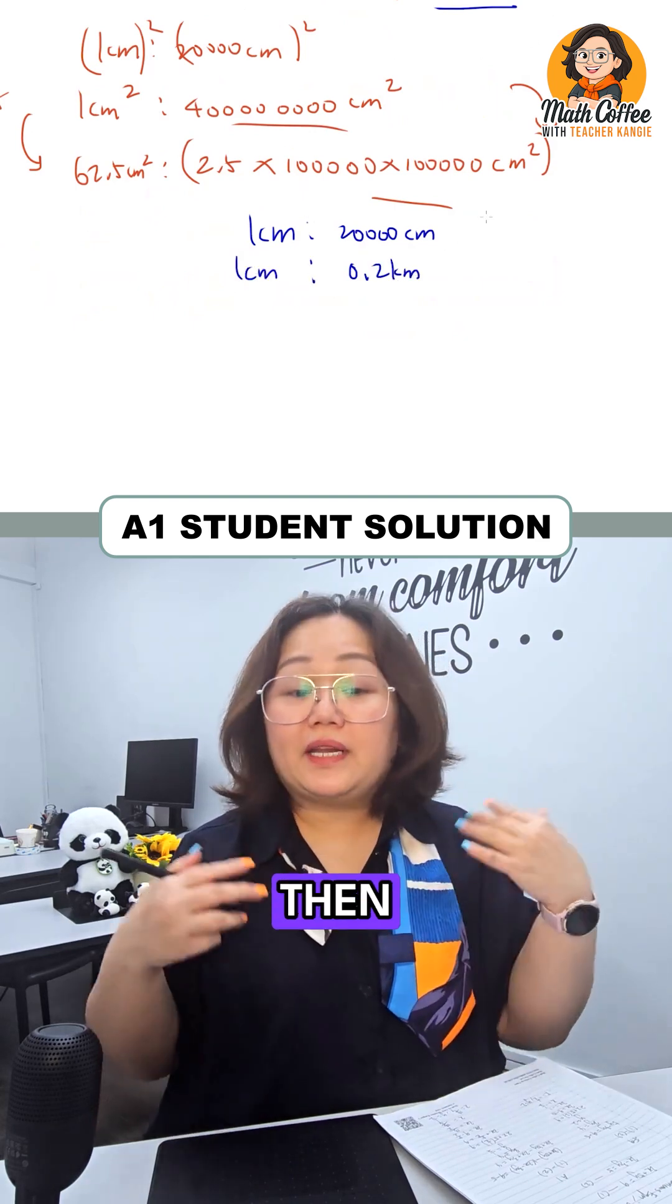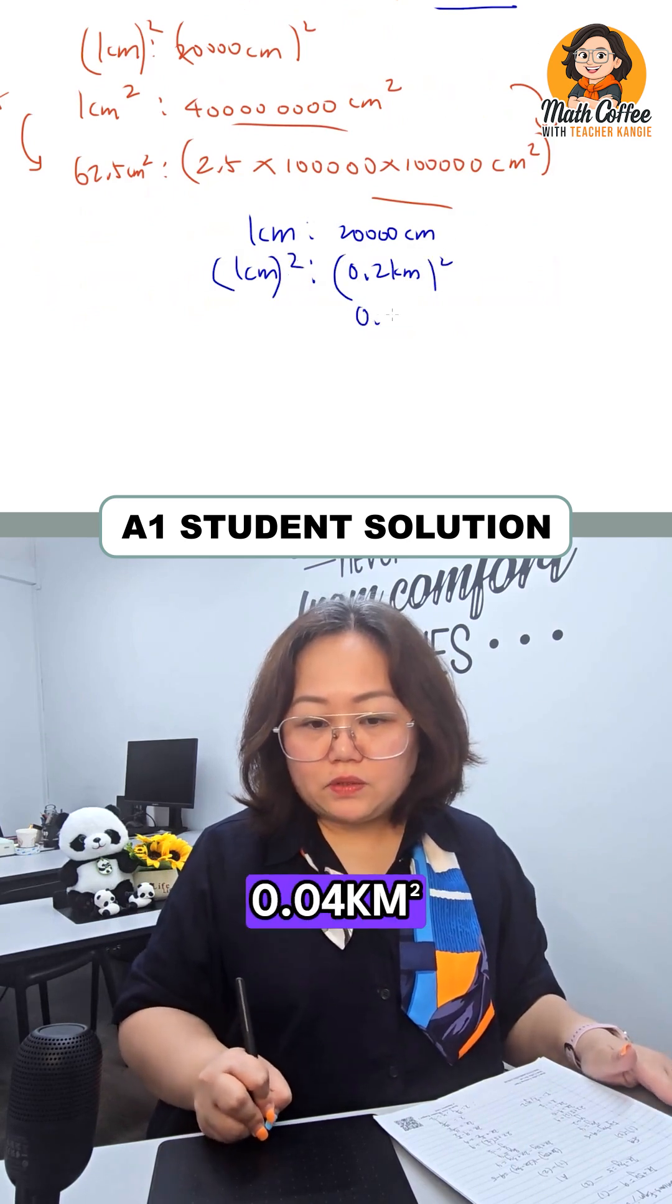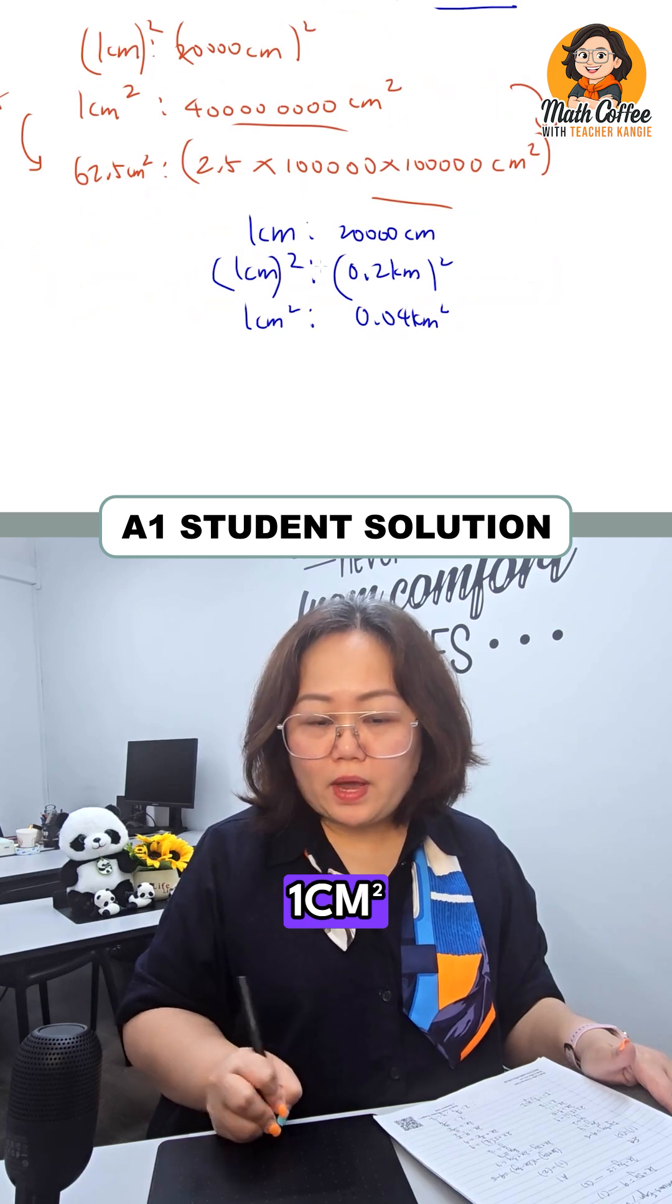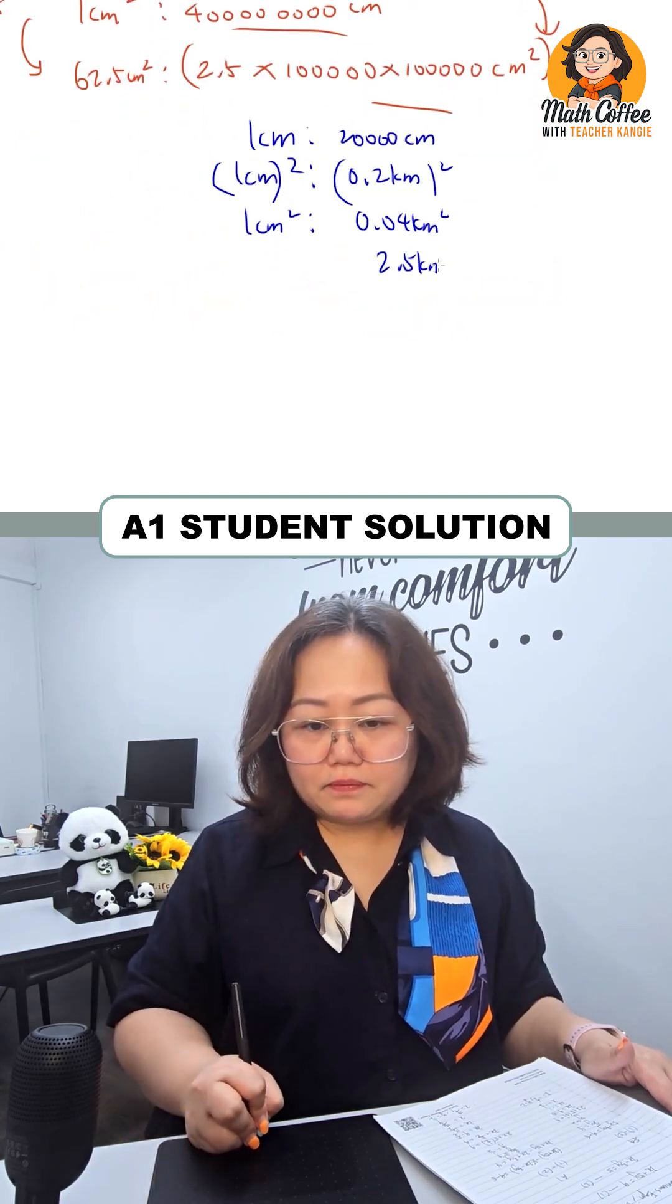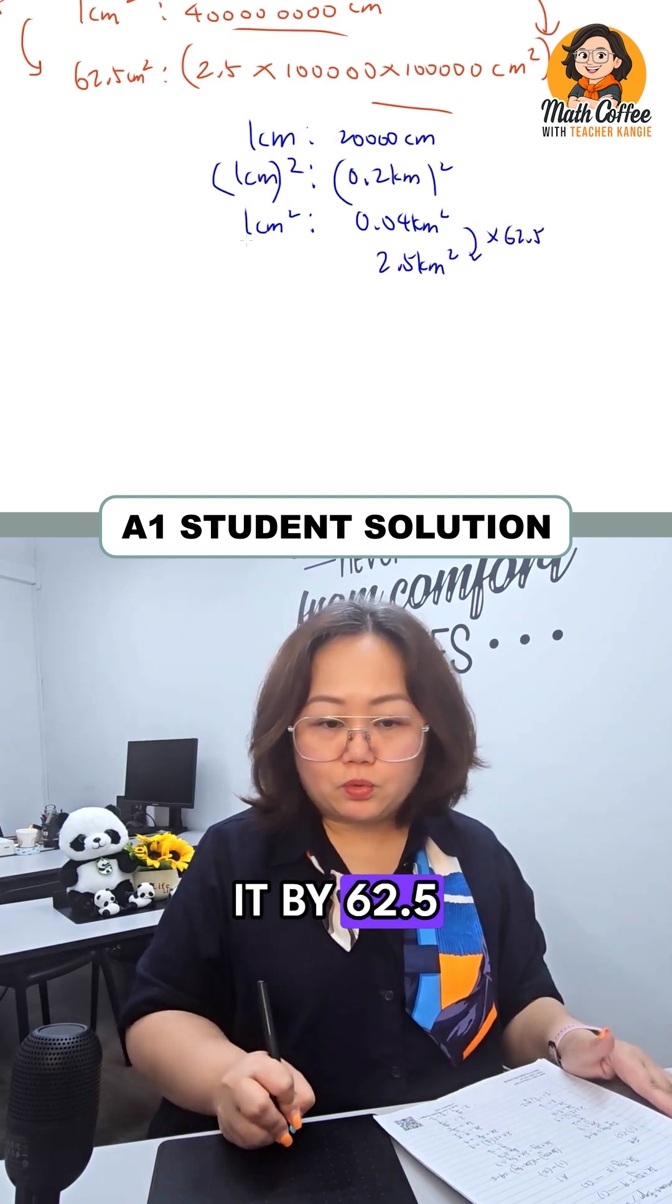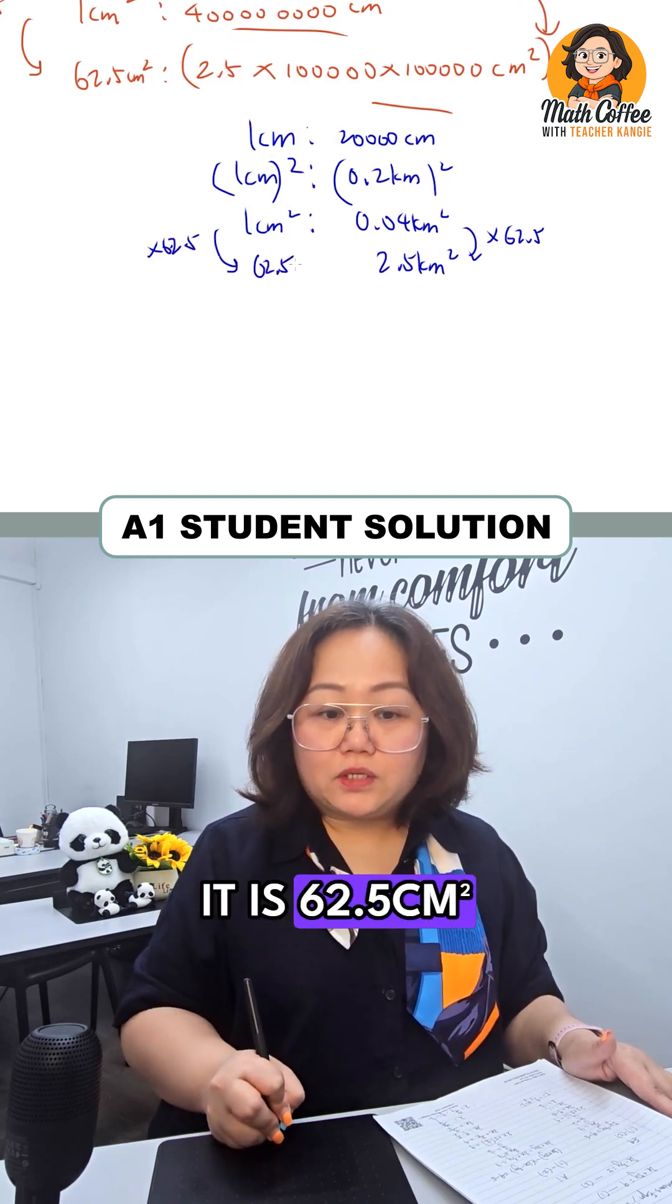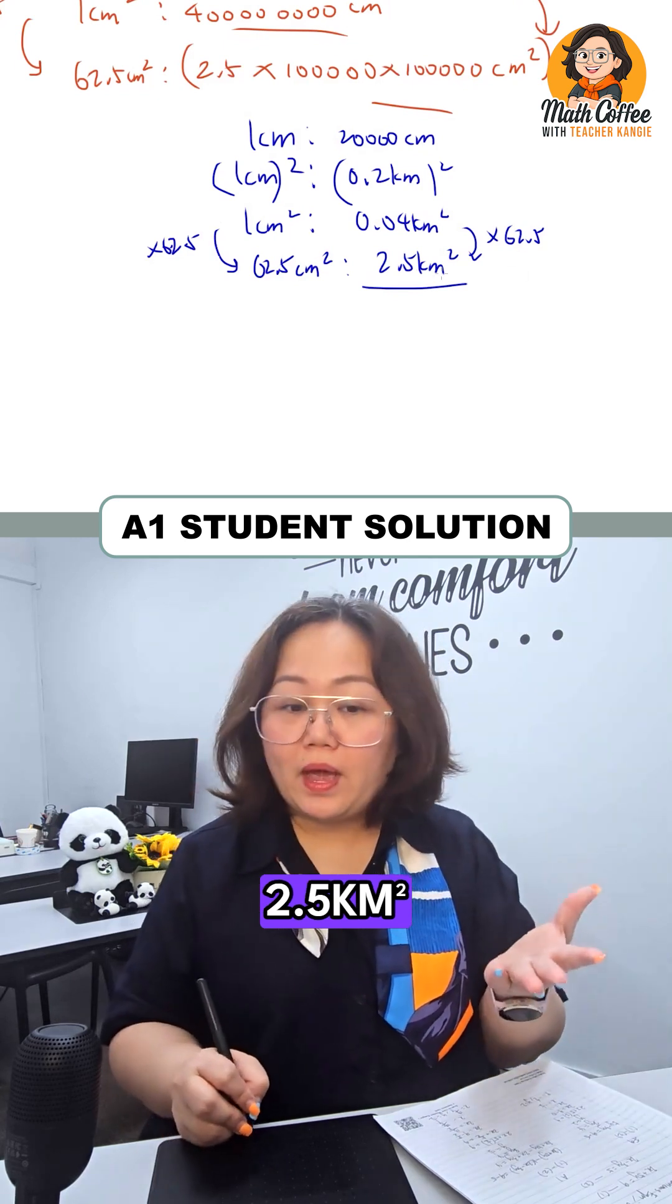After you change it, now you can square it. And you get 0.04 km squared and 1 cm squared. Now put 2.5 km squared on the right hand side. Key calculator 2.5 divided by 0.04 and you know that you have to multiply it by 62.5. Do the same to the left hand side. Therefore it is 62.5 cm squared that represents 2.5 km squared.